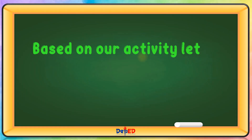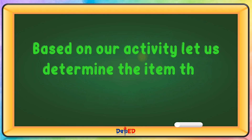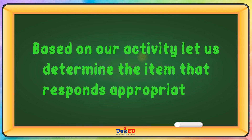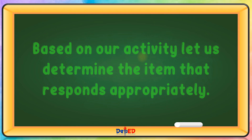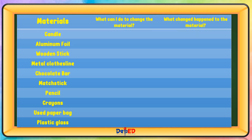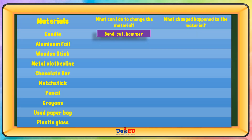Based on our activity, let us determine the item that responds appropriately. Candle — what can I do to change the material? Bend, cut, and hammer. What change happened to the material? Changes in size, shape, and texture.